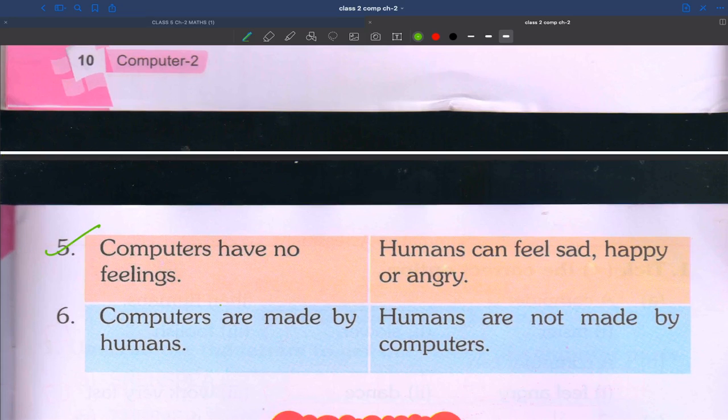Fifth point: computers have no feelings. Humans can feel sad, happy, or angry.